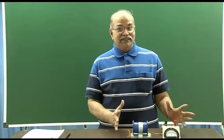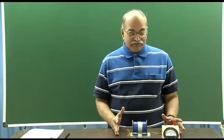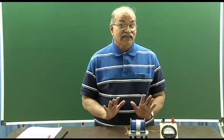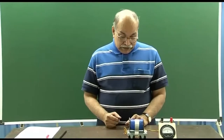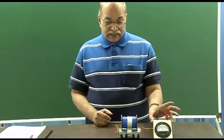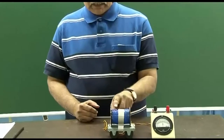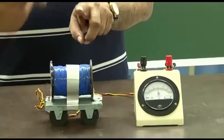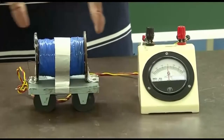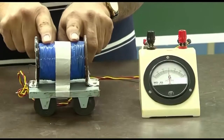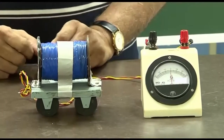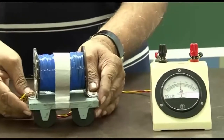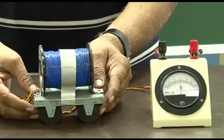We will start with repeating this experiment on our table, and then we will discuss the physics of why and how it works. You can see the instruments - we have this galvanometer, and this is in fact a coil. This blue thing you are seeing is just tape. We have put a coil of several hundred turns and then fixed it with this tape. And this cart is to facilitate the movement of this coil.